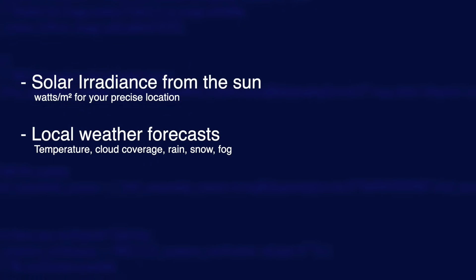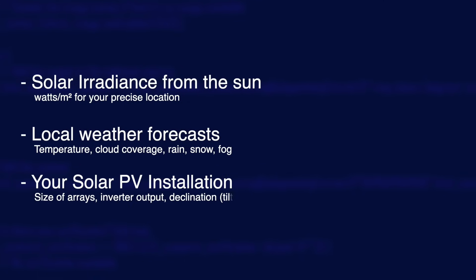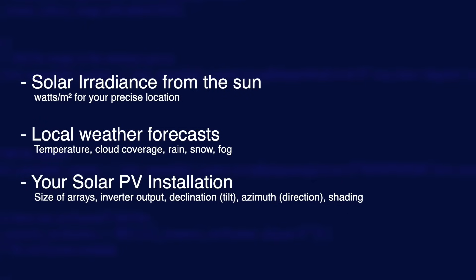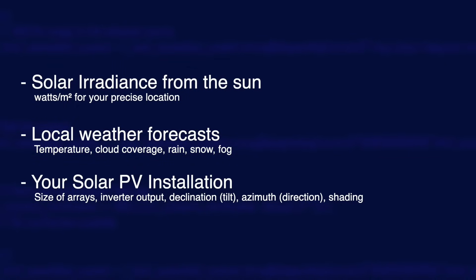It then combines that with localised weather data — cloud coverage, rain, that sort of thing — and applies it to your solar PV installation. This requires knowledge of the size of your arrays, the power output of your inverter to understand clipping issues, the orientation of your array (the precise direction it is facing — for example, perfectly south would be 180 degrees), the declination or angle of your panels (basically the angle of your roof), and any shading issues which affect generation at certain times of day.